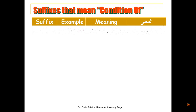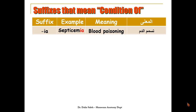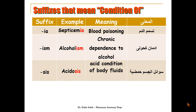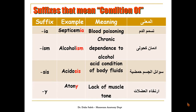In the following examples we can see suffixes that mean 'a condition of.' As in 'septicemia,' which means blood poisoning — the suffix is '-ia.' As in 'alcoholism,' which means a condition of dependence on or chronic use of alcohol — the suffix is '-ism.' As in 'acidosis,' which means a condition of acidity of the body fluids — the suffix is '-osis.' As in 'atony,' or lack of muscle tone — the suffix is '-y.'